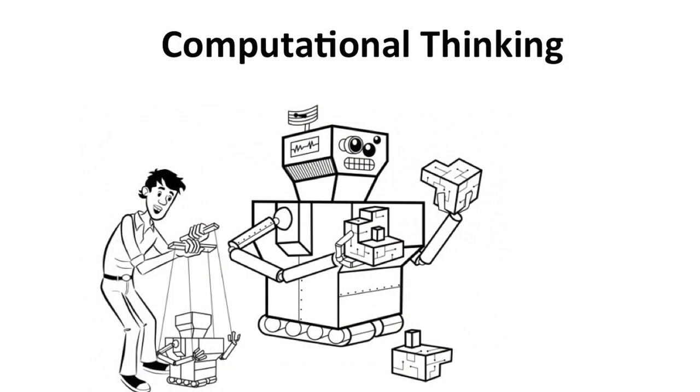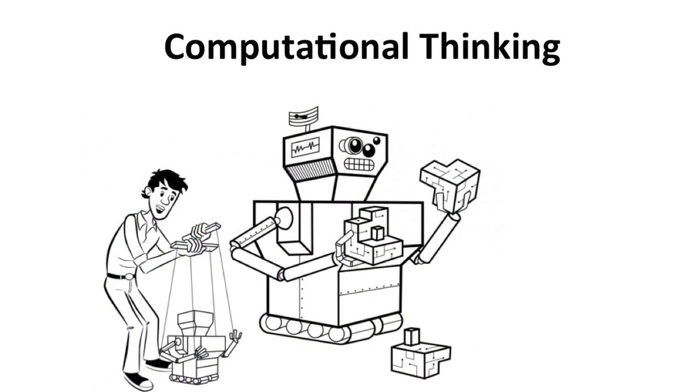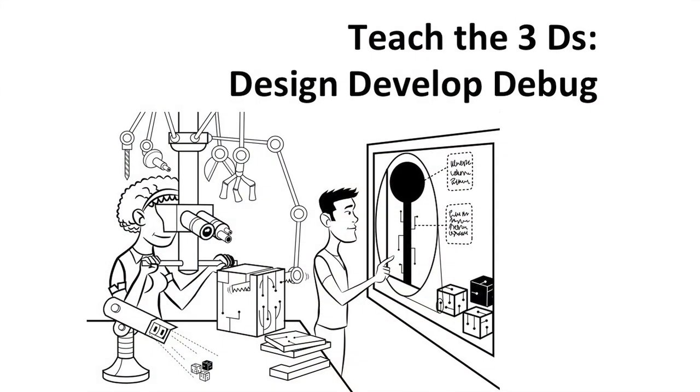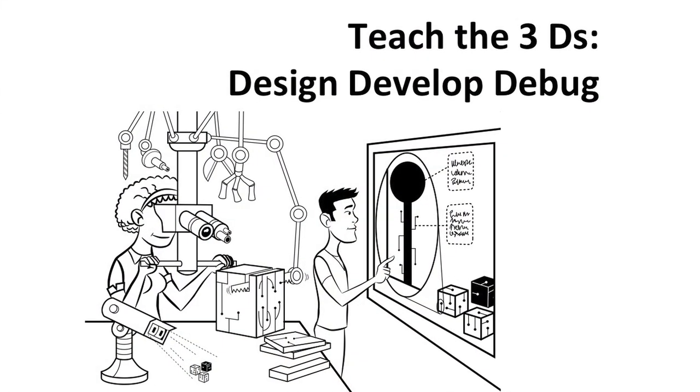That's why people like Professor Jeanette Wing at Carnegie Mellon University proposed and promulgated the idea of computational thinking — that children in schools, secondary and primary, can be taught these complex ideas. So I say we need to get away from the three Rs, which are important, but we need to introduce the three Ds: design, develop, and debug.